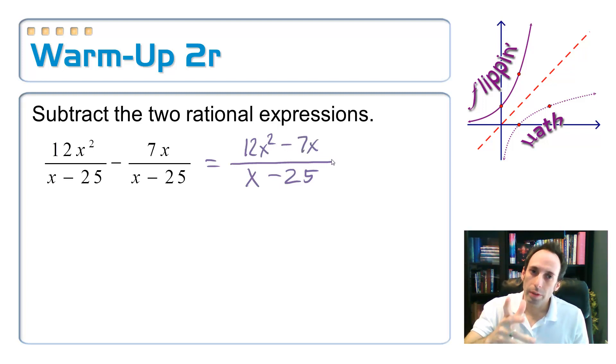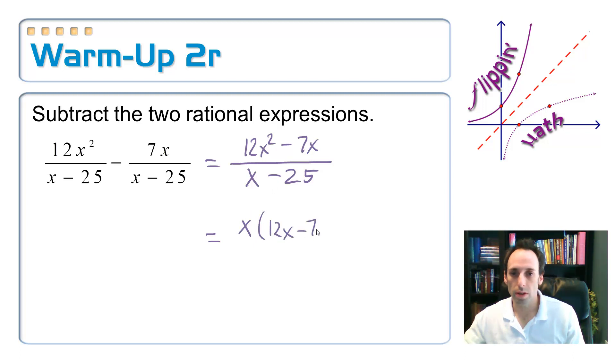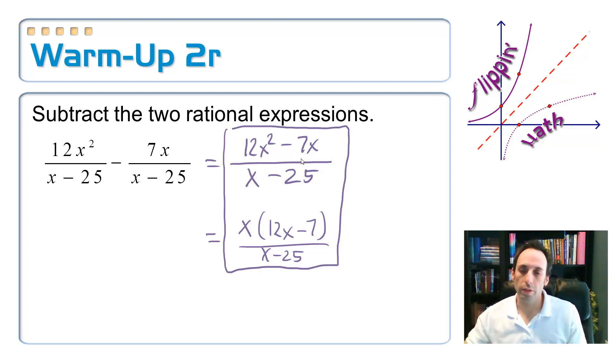Now you might think you're done here, but maybe not. Let's just see if I could factor the top. I know I could factor the top because they at least have an x in common. So I pull out the x, 12x minus 7 on the bottom, x minus 25. And if I could, I would cancel some stuff out, but I can't. So really, technically, the first one would have been perfectly okay.